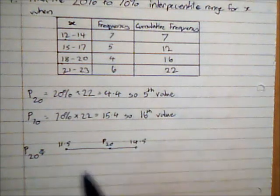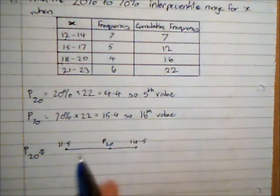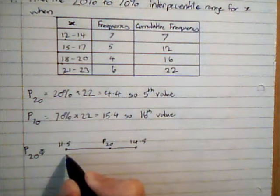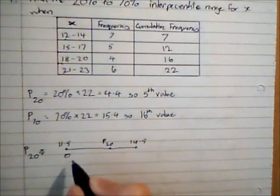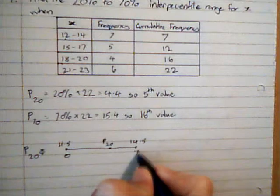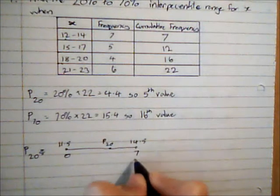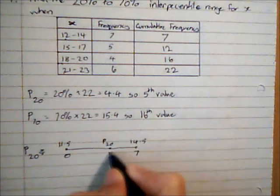And then on the other side of this line, I am going to mark on the values, so the frequency. So the start of the first group, there is a frequency of 0. By the end of the first group, the frequency is now 7. And P20 we are estimating is the 5th value.